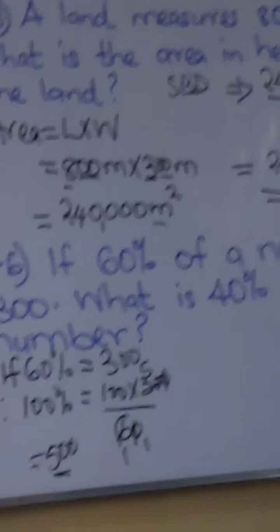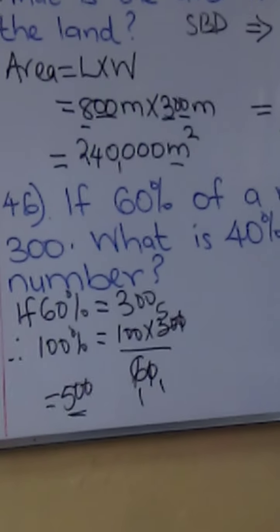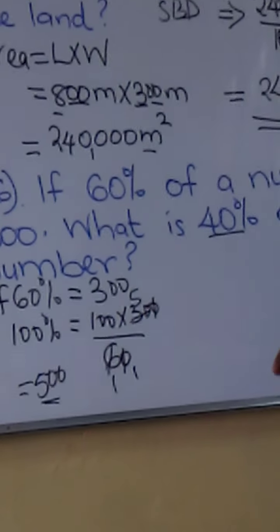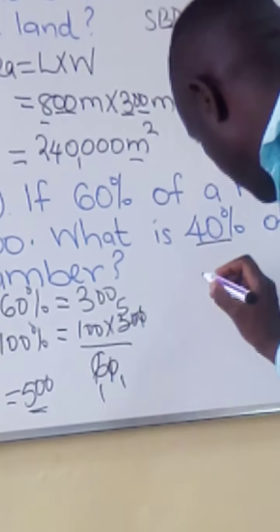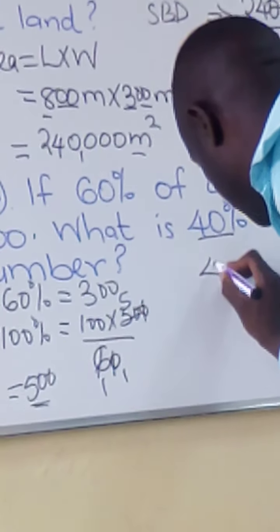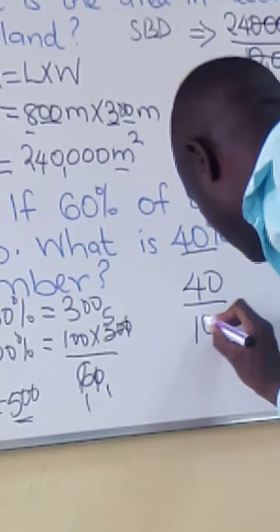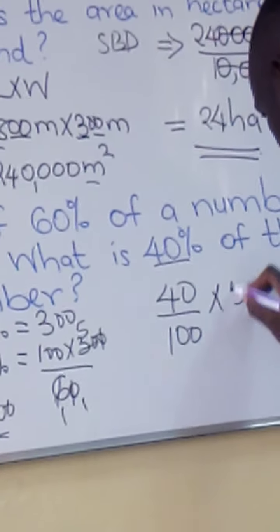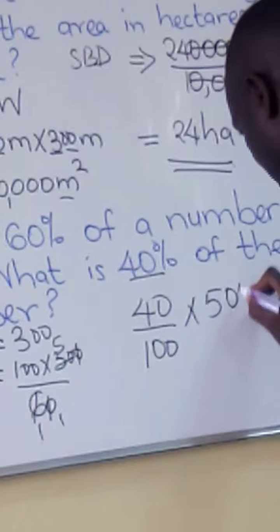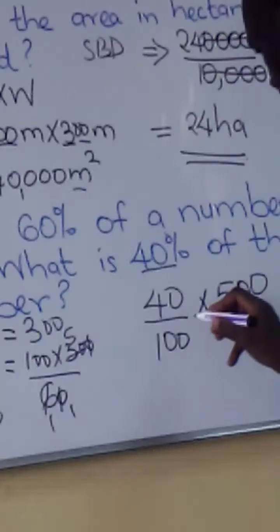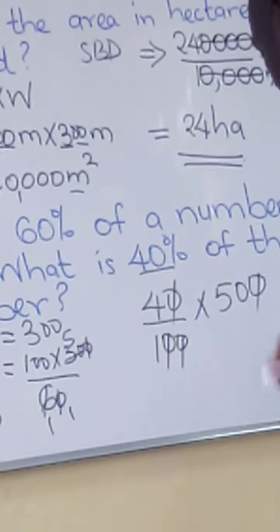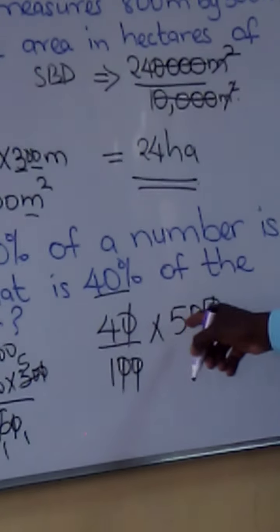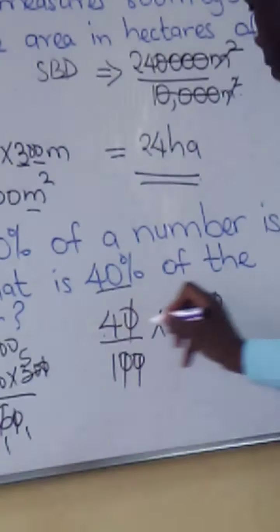Then 40 percent of 500 equals 40 over 100 times 500. That gives us 4 times 50, which is 200. So 40 percent of the number is 200.